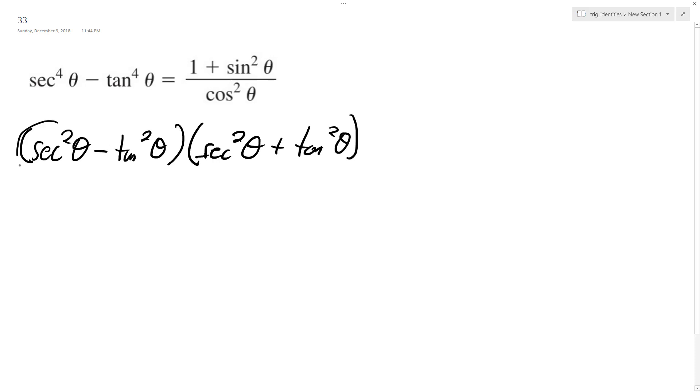All right, so this identity is equal to 1. You'll just have to take my word for it. And then we're left over with just secant squared theta plus tangent squared theta.